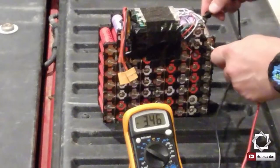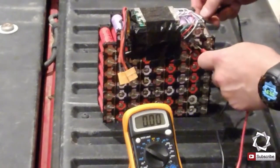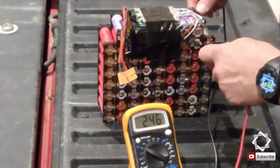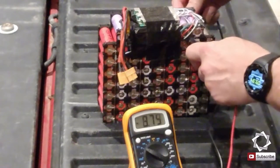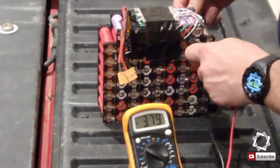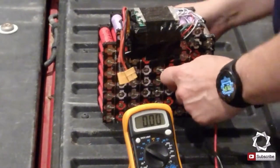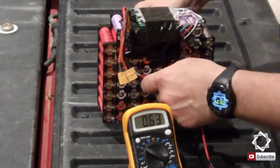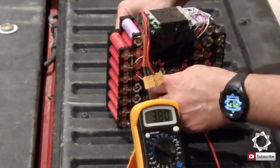Now I want to check each of the cells to see how they're at. 3.77, there's a little bit of life left in that. Ooh, 2.45, that is way too low - that's a half a volt too low. This one here, 3.79, that's not terrible.